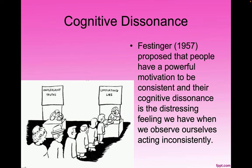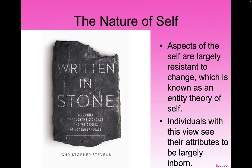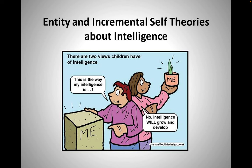Festinger in 1957 proposed that people have a powerful motivation to be consistent, and cognitive dissonance is the distressing feeling we have when we observe ourselves acting inconsistently with what we believe. The belief that we can easily change is referred to as an incremental theory of self — traits are malleable and can be improved. Aspects of the self that are largely resistant to change reflect an entity theory of self, where attributes are seen as written in stone.